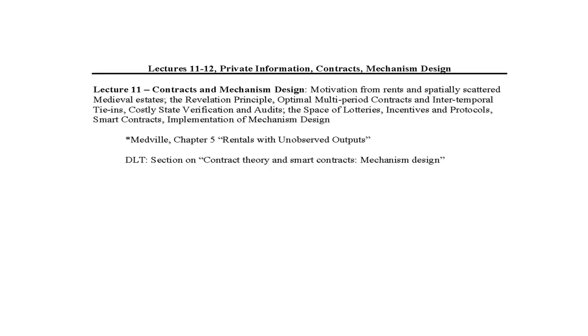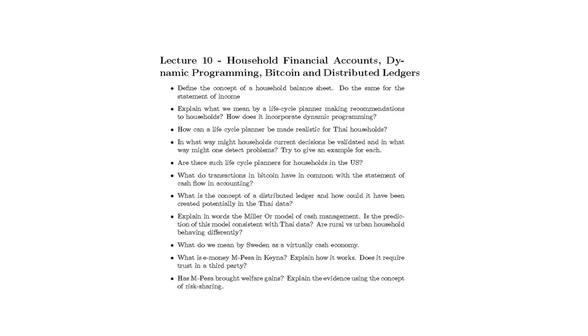Now the other thing is the reading list. So today, contract theory and mechanism design, there's only one starred reading: rentals with unobserved outputs, chapter five of Medville. There's a not starred reading, and I have material on that in the lecture today. It's this distributed ledger MIT book, this chapter, although I've learned a little bit more since I wrote the book, which was published yesterday. And I'll share a little bit of that in the lecture.